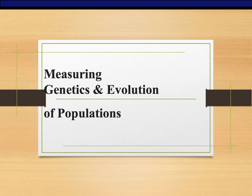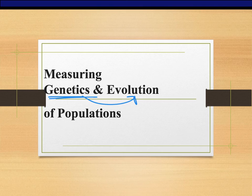Let's talk about genetics and how it relates to evolution of populations. We've talked quite a bit about how DNA works and how DNA makes proteins. What we're going to talk about now is how those proteins make characteristics and how those characteristics change over time, changing how populations interact with the environment, which basically impacts how our planet Earth functions.